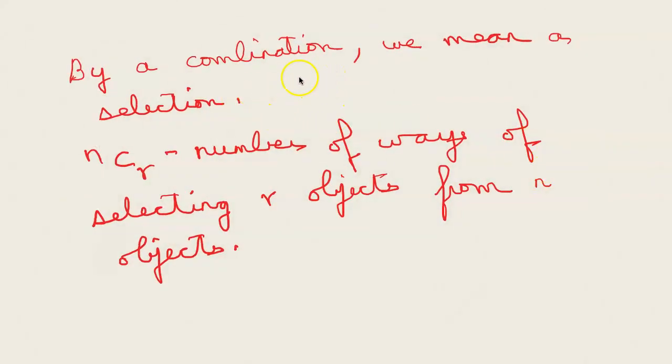So what is a combination? By a combination we mean a selection of objects. And nCr is the number of ways of selecting r objects from n objects.